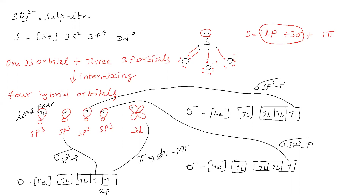For sulfur in sulfite, the hybridization is sp³ with one lone pair and three sigma bonds. The shape is trigonal pyramidal, or simply pyramidal.